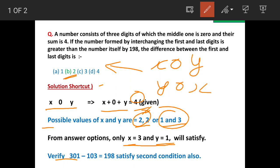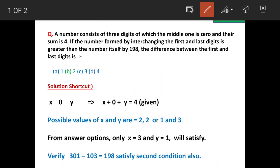So 3, 0, 1 will become 1, 0, 3. And the difference is 198. So this satisfies the second condition also. So our answer is option B, the difference of digits is 2.